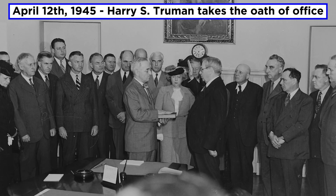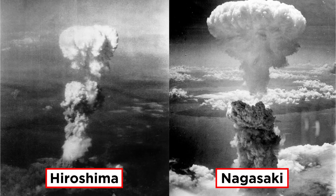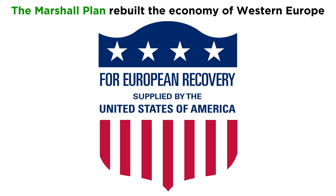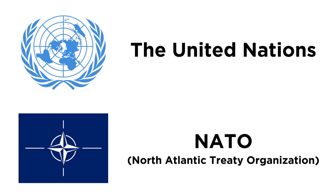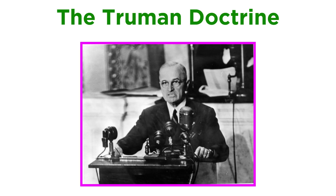Harry S. Truman succeeded to office after the death of Franklin Roosevelt in the final months of World War II. He ordered the atomic bombs dropped on Hiroshima and Nagasaki, prompting the Japanese surrender and the end of the war. He launched the Marshall Plan to rebuild the economy of Western Europe, and he helped set up the United Nations, as well as NATO, in order to counter the Soviet communist threat throughout Eastern Europe. He established the Truman Doctrine, and through the UN, fought communist North Koreans to a stalemate in the Korean War.